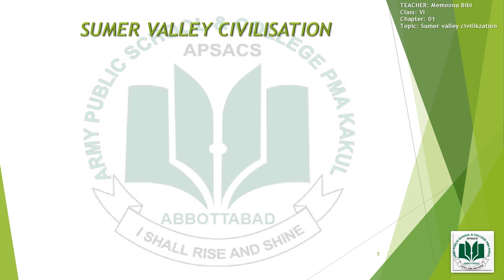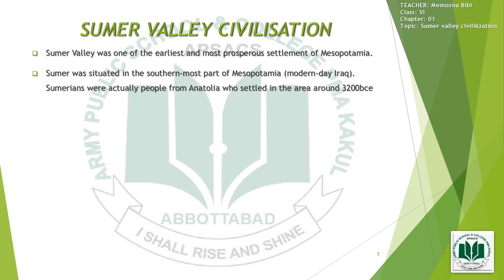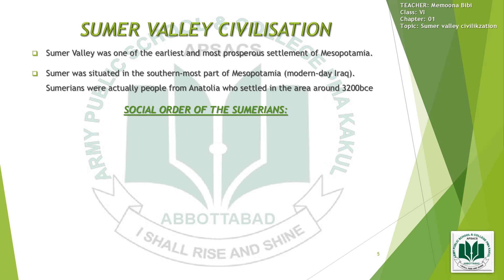Sumer Valley Civilization. Sumer Valley was one of the earliest and most prosperous settlements of Mesopotamia. Sumer was situated in the southernmost part of Mesopotamia, modern-day Iraq. Sumerians were actually people from Anatolia who settled in the area around 3200 BCE. Sumer was an ancient civilization founded in the Mesopotamia region of the Fertile Crescent, situated between the Tigris and Euphrates rivers, known for their innovations in language, governance, architecture, and more. Sumerians are considered the creators of civilization as modern humans understand it.